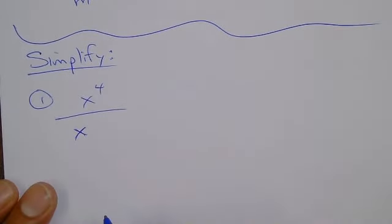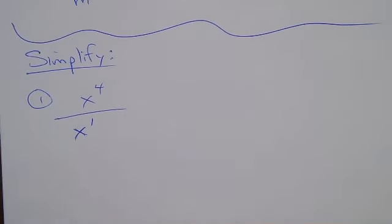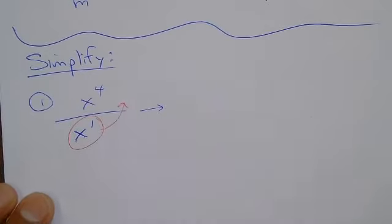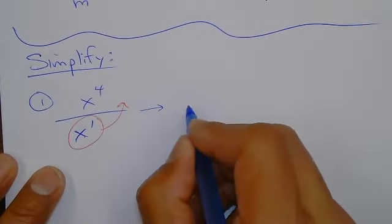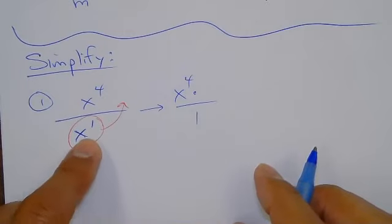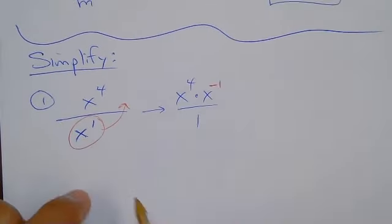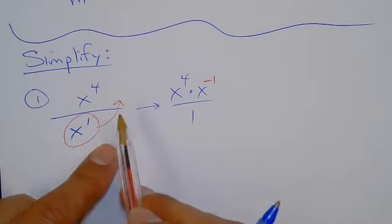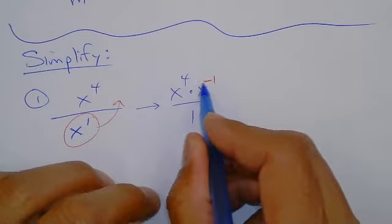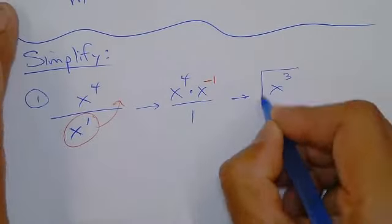Both are positive, so how do you know which one to move? Move the smaller one up. When I move the x from the bottom up, what's left in the bottom is a 1. That gives you x⁴ times x to the negative 1 — because it was positive, but when you move it up it changes sign, just like with a negative. When you add those, you get x to the power of 3.